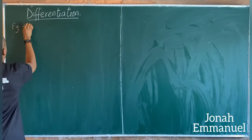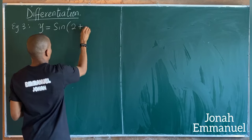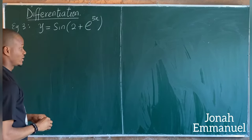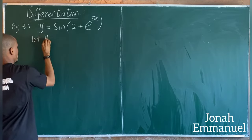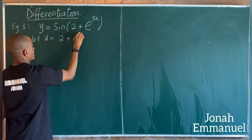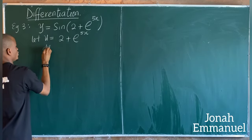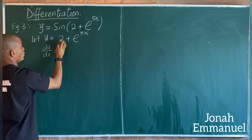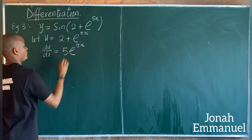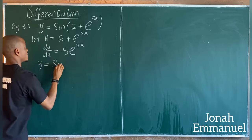Example three: let's say y = sin(2 + e^(5x)). I'm asked to differentiate this. Let u be equal to what's in the bracket: 2 + e^(5x). Then du/dx — the constant gives zero, and differentiating e^(5x) gives 5e^(5x) — so du/dx = 5e^(5x).